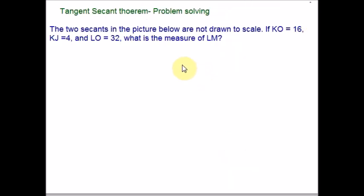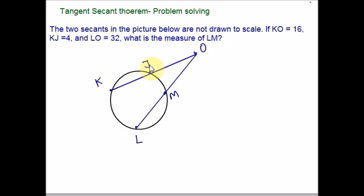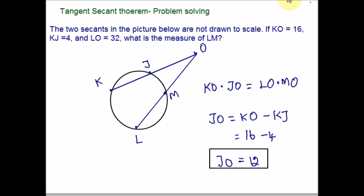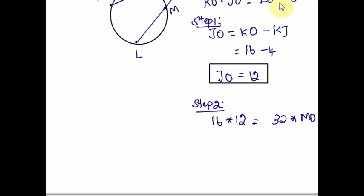Here is the next example. Let me draw the figure for you. The measurements for Ko, Kj, Lo are given. We are supposed to find the measure of Lm. So how do we use the theorem to find the side? Lm. Ko times Jo will be equal to Lo times Mo. That is the theorem. So what is Jo? Jo is nothing but Ko minus Kj. Where Ko is 16 and Kj is 4. Therefore, Jo is 12. Now let us plug in all this given information in the formula. Ko can be replaced by 16, Jo by 12, and Lo by 32. The direct information for Jo is not given. We are just using the given information Kj to find the measurement of Jo. This is our step 1. Step 2 is plugging in all the given information and the answer from step 1. 16 times 12 is 192.